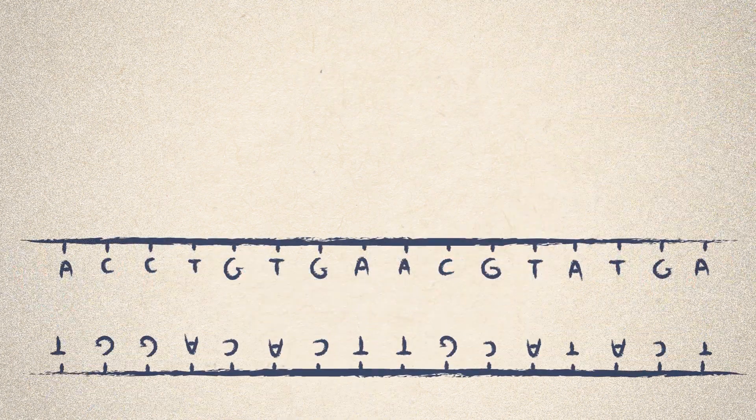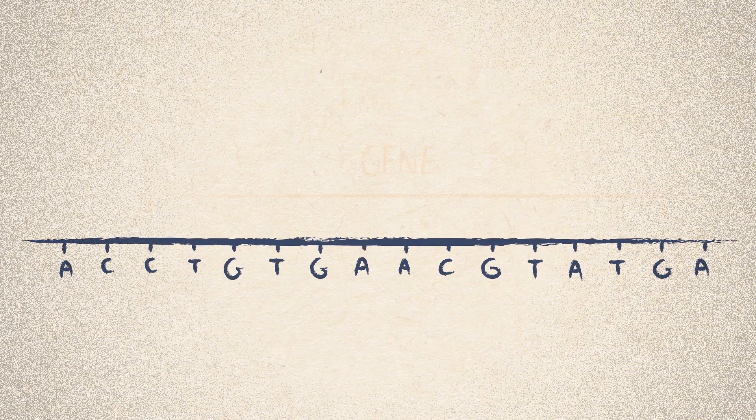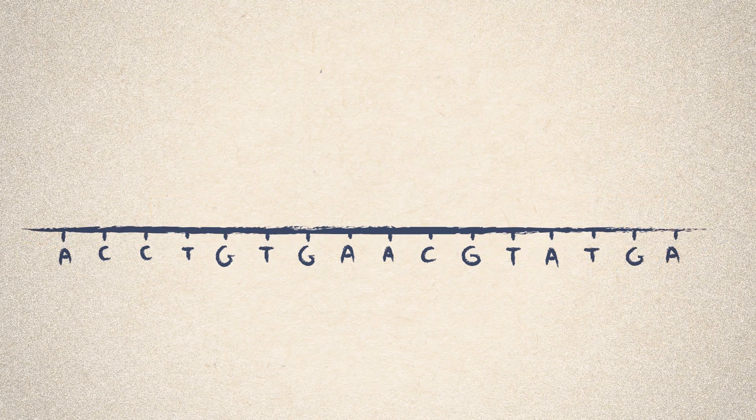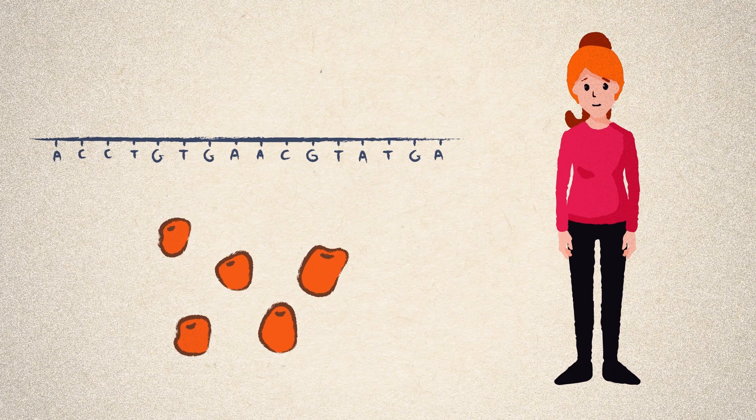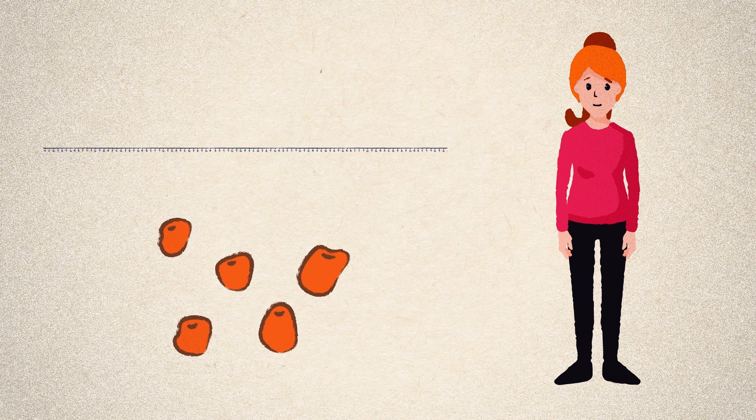The cells of your body use sections of DNA sequence called genes as templates to make proteins and other molecules you need to function. Genes can be anywhere between hundreds and millions of letters long.